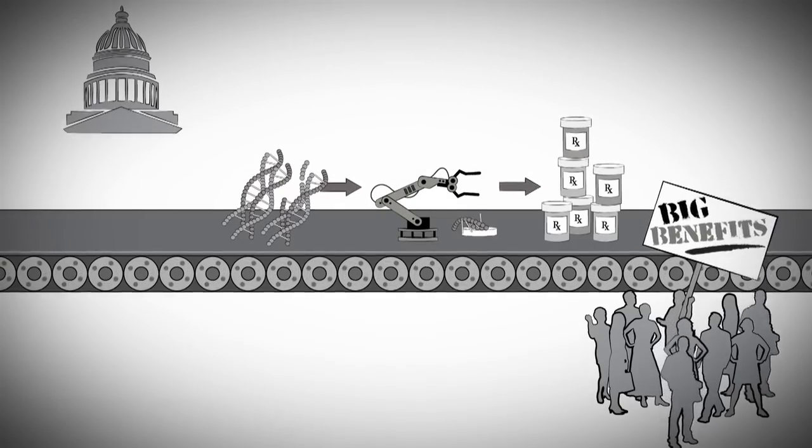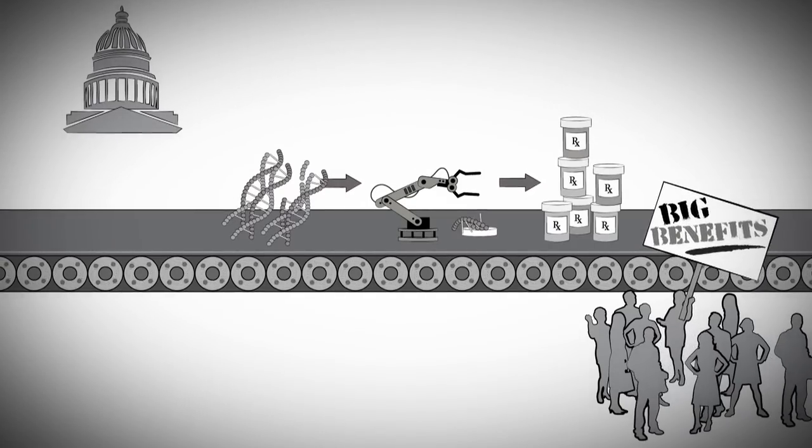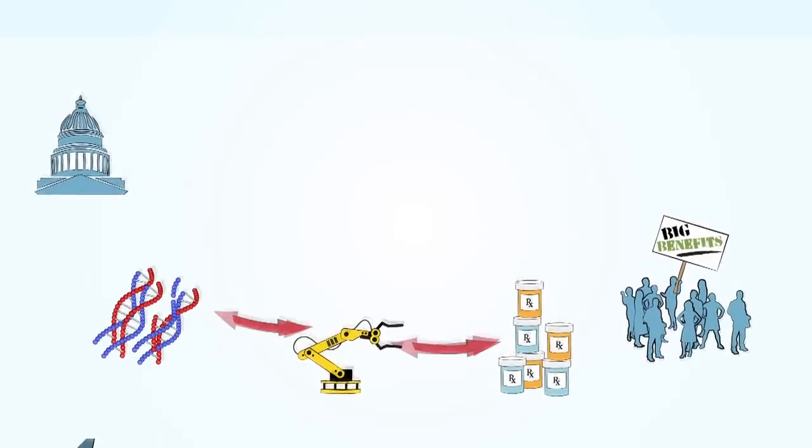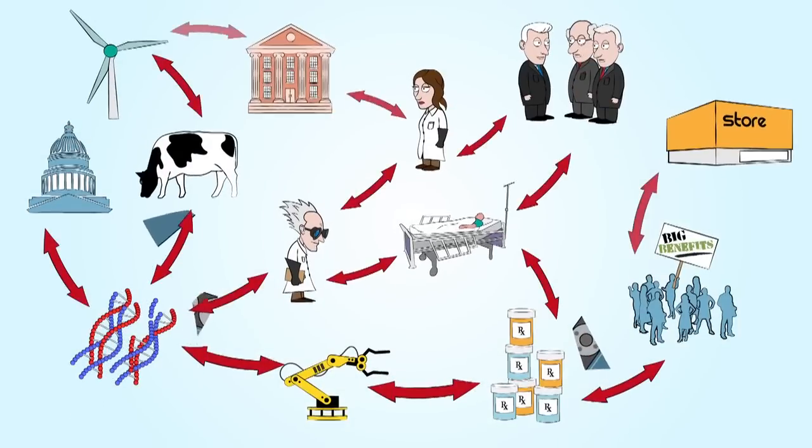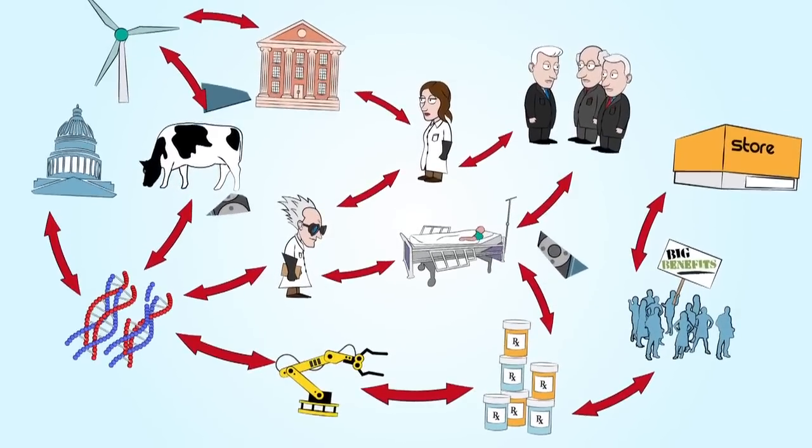We now know that the real situation is far more complex. Research on science and innovation over the past several decades has shown us that the process functions less like a conveyor belt and more like a complex system, an ecosystem.